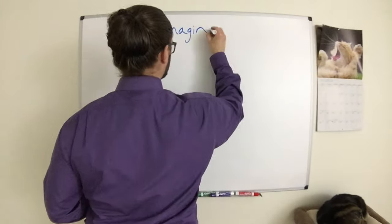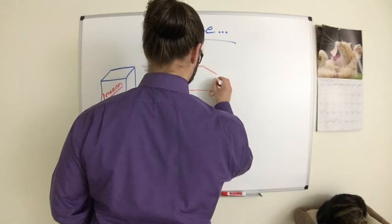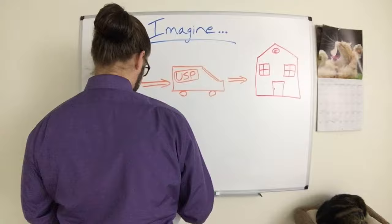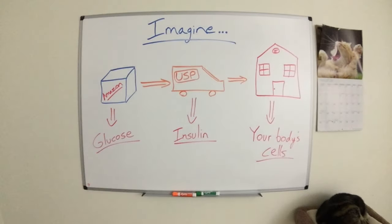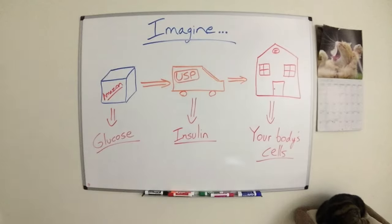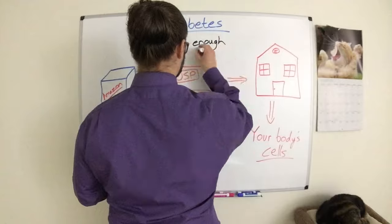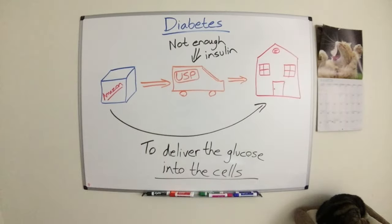So let's get back to insulin. Imagine that glucose is a package from Amazon, and you can't get that package delivered to your house without a delivery truck. In this analogy, glucose is the package, insulin is the delivery truck, and your house is a cell within your body. Simply put, diabetes is kind of like there not being enough delivery trucks to deliver your package — there's not enough insulin available to deliver the glucose into your cells.